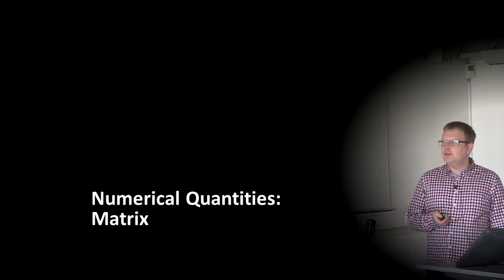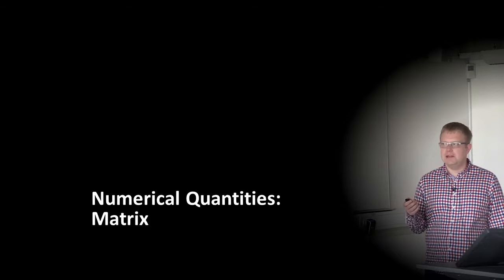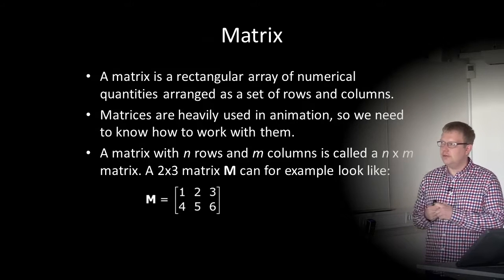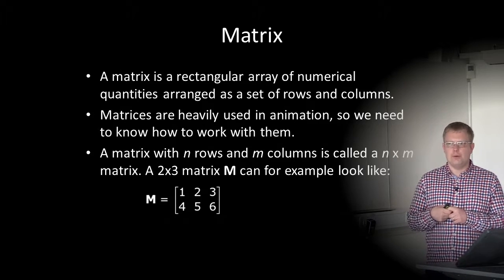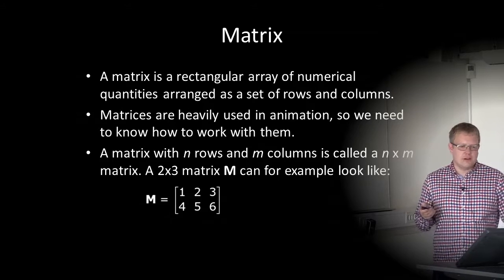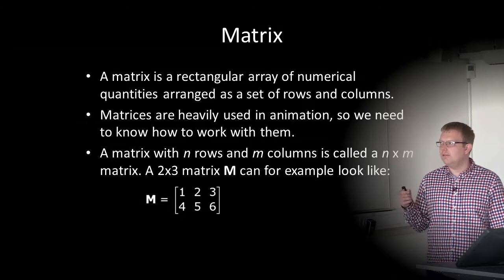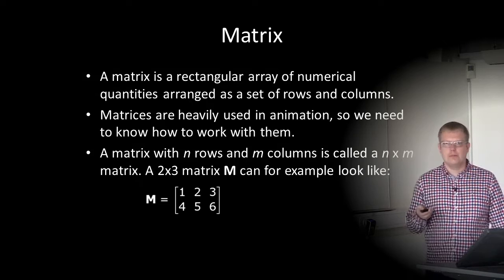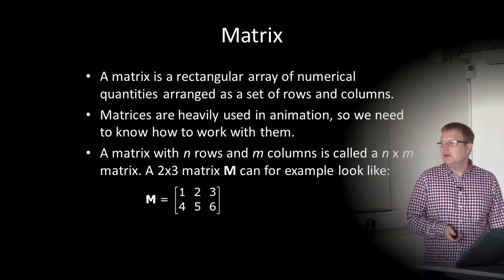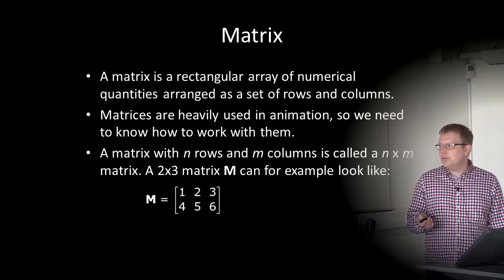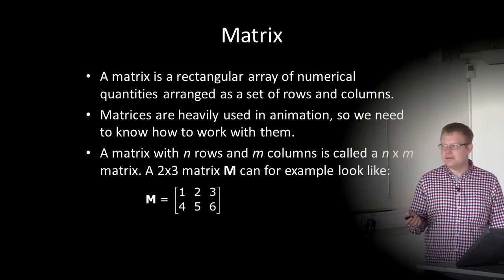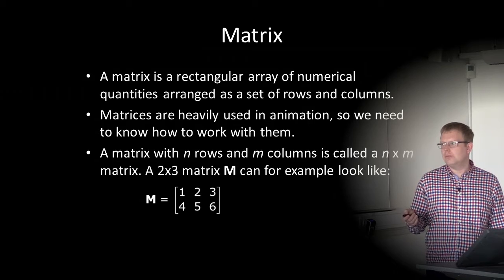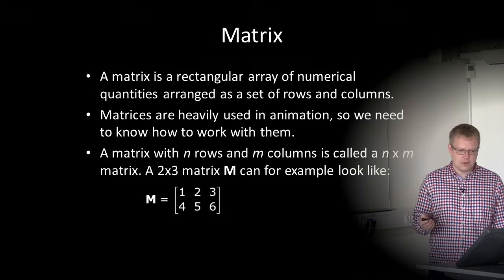The other numerical quantity we need to be familiar with is the matrix. A matrix is a rectangular array of numerical quantities arranged in rows and columns, and they are heavily used in animation and graphics. A matrix with N rows and M columns is called an N×M matrix. For example, a 2×3 matrix M could look like: first row [1, 2, 3], second row [4, 5, 6].